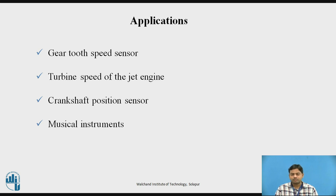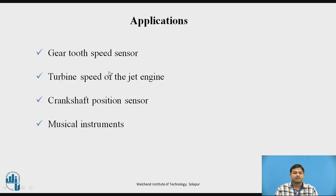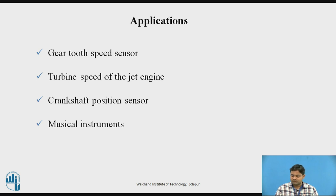Coming to the applications of the VR sensor or reluctance pickup: it is used to measure gear speed, and it has an application in measuring turbine speed. As explained, it works at high temperatures, so it can work in that harsh turbine environment. It is also used in musical instruments as a VR pickup coil. These are the different applications of reluctance pickup sensors.